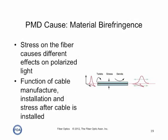Material birefringence is caused by stress on the fiber. Obviously the stress can be localized, and in the case of aerial fiber, change over time. Data has shown that stress-caused PMD can even be correlated with things like wind conditions affecting aerial fiber. Like waveguide birefringence, it can vary over time as stress in the cable plant changes.